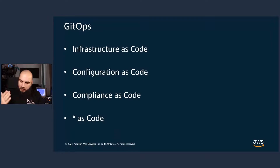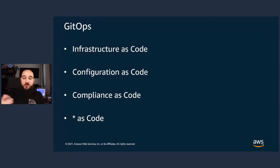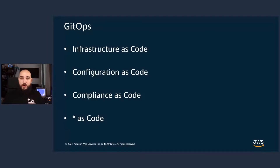So that is GitOps. All of the desired state of a system needs to be in a version control system which can be audited, traced, and versioned.